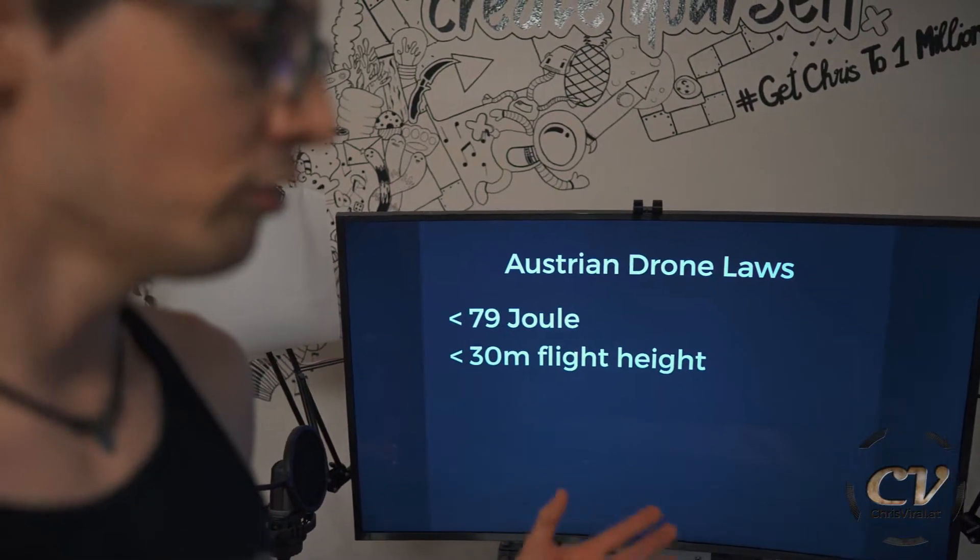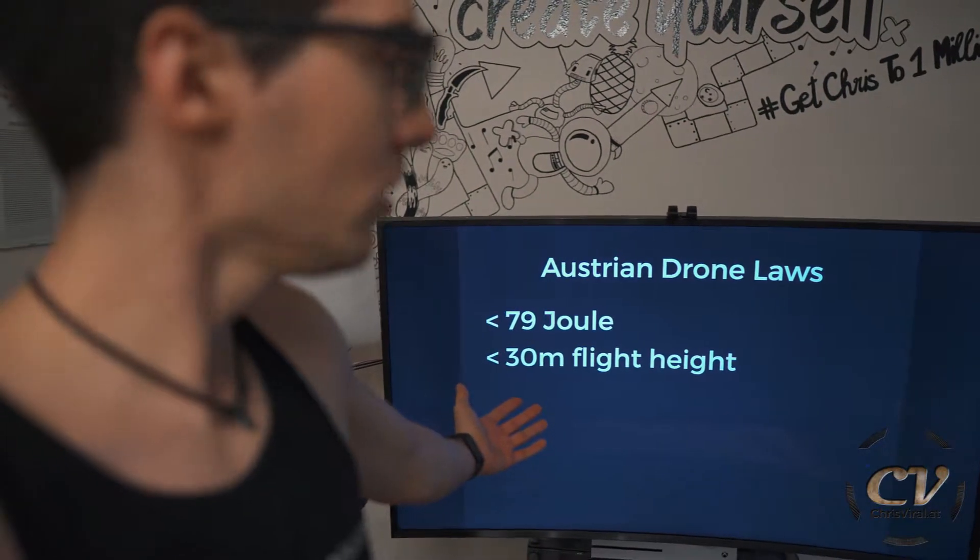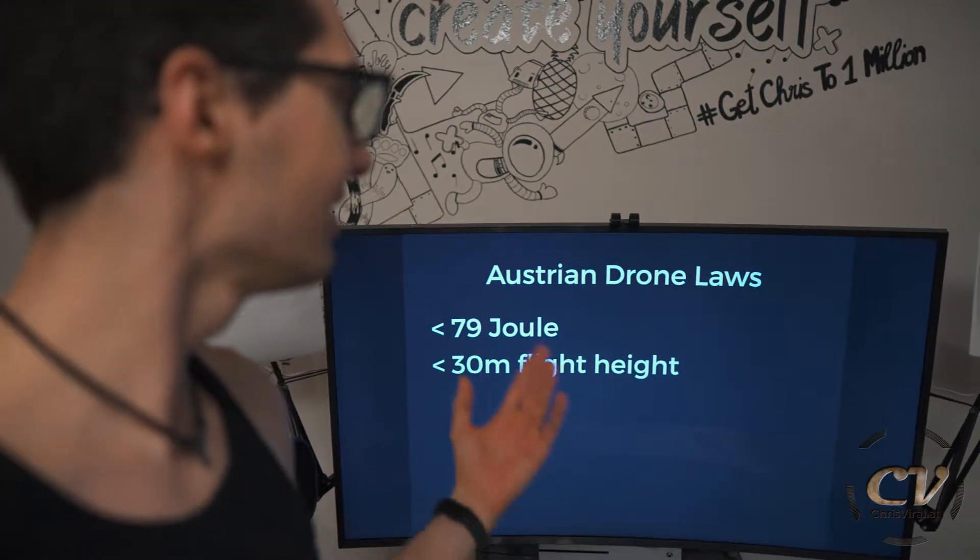In Austria, there are basically two laws regarding which drones you're allowed to use. First of all, 79 joules of energy. Second of all, 30 meters of max flight height. The joules determine the max flight height allowed, and you're also not allowed to fly above 30 meters. So this energy rule gives you a bit of playground, but the 30-meter max height is a hard limit.